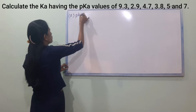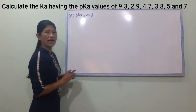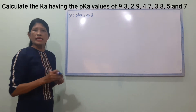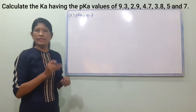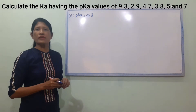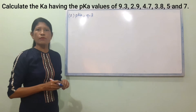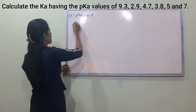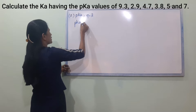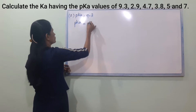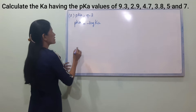For the PKA value of 9.3, we use the formula: PKA is equal to minus log Ka. So log Ka is equal to minus PKA.